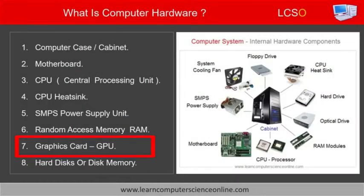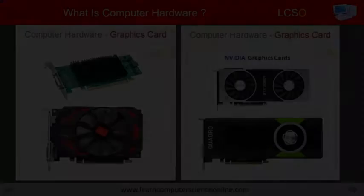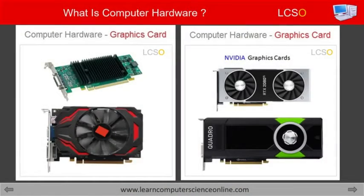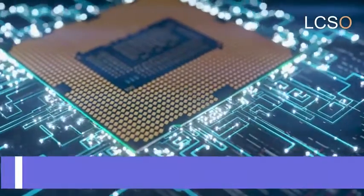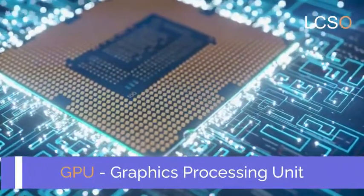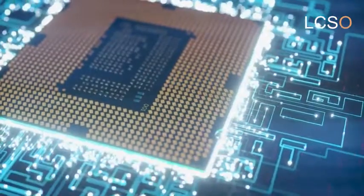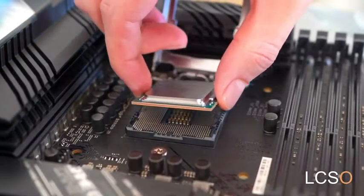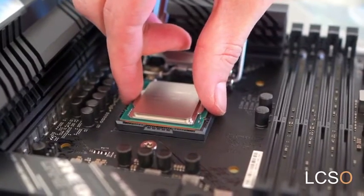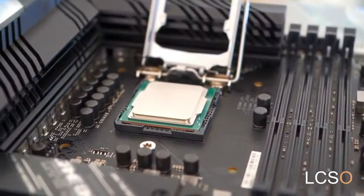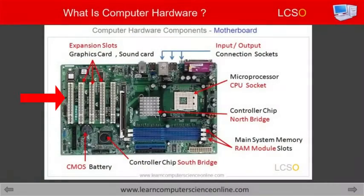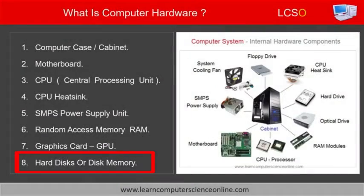The next important hardware component on our list is the graphics card. The graphics card is equipped with a dedicated microprocessor which provides adequate processing power to independently handle the graphics processing function. High-end computers are equipped with a separate graphics card with a dedicated processor called a graphics processing unit, or GPU. High-performance computers are mainly used for high-end jobs such as video editing, computer graphics, or playing high-end video games. The graphics card significantly improves the user experience and the quality of the graphics rendered by the computer system.